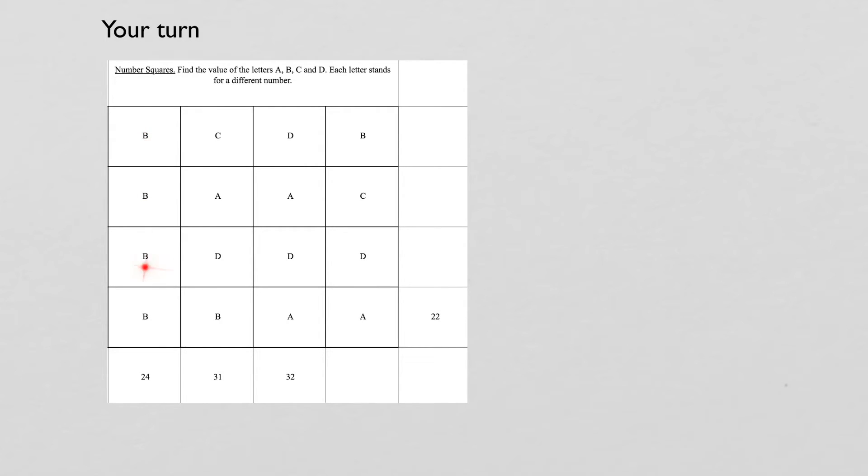So did you see that 4b equals 24? So in that case, 1b equals 6. And then from there, we have to look at this column at the bottom, a plus b plus b. So 2a plus 2b equals 22. If I divide everything by 2, that means that a plus b equals 11. And we know that b is 6. So in that case, a equals 5.